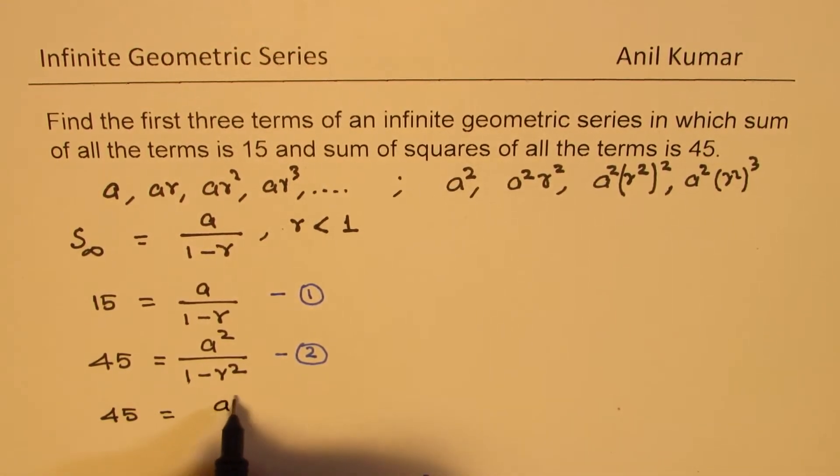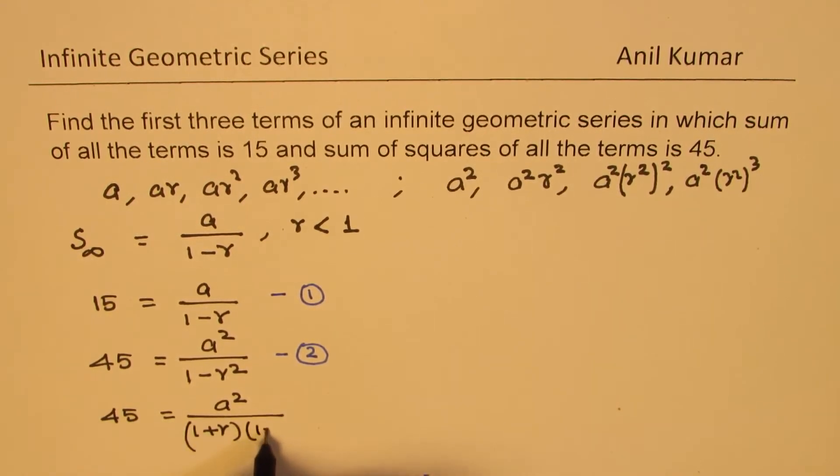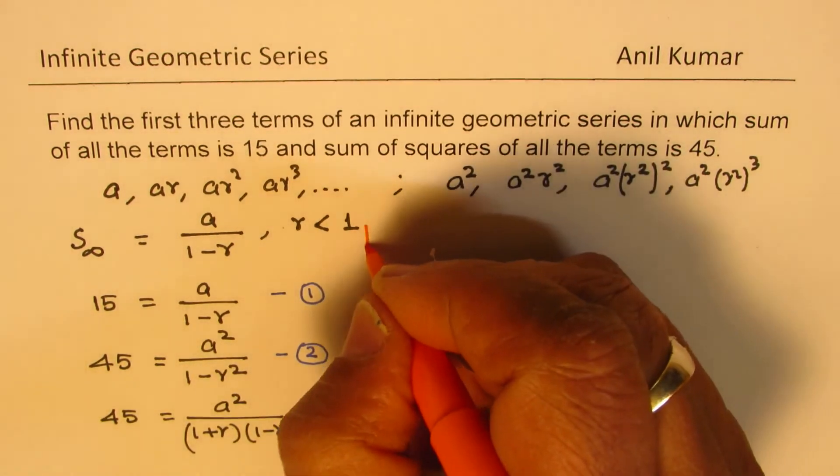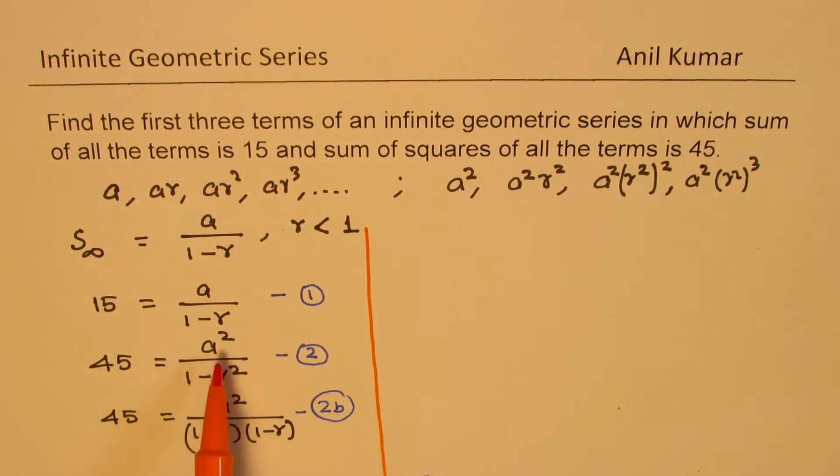Let me rewrite equation number 2 in slightly different way, factoring the denominator. We can write this as A square over 1 plus R times 1 minus R. So this is the same as equation 2. Now if I want to eliminate A square, then I should divide this by this.